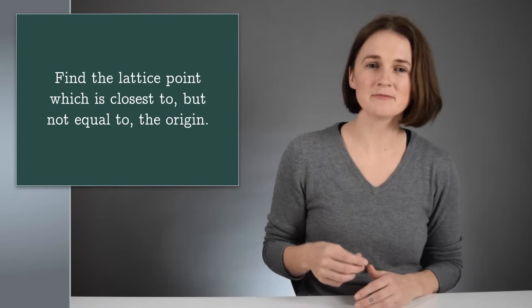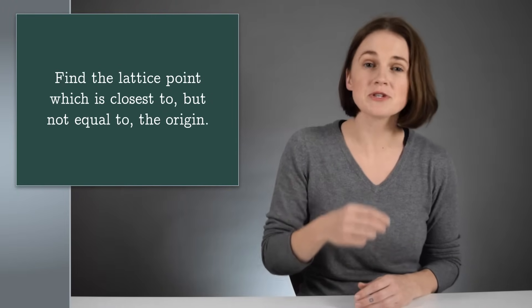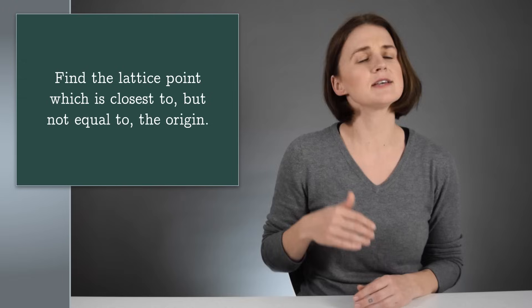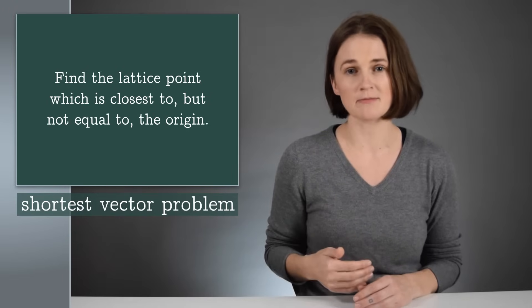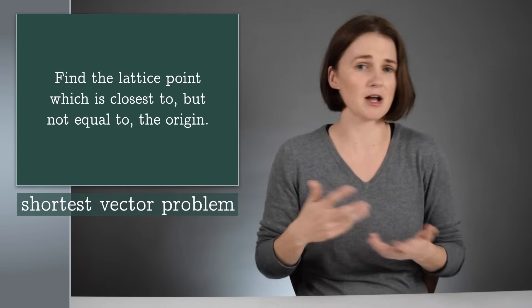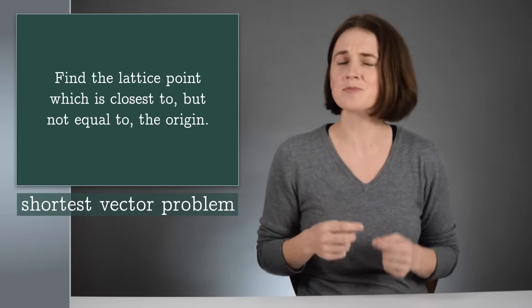This problem, find the lattice point which is closest to but not equal to the origin, is called the shortest vector problem. Our method, trying different combinations that seemed good, was pretty inefficient. It's possible that the optimal solution comes from adding together many red and blue vectors.